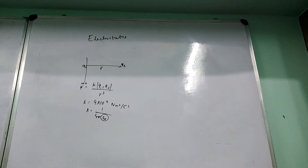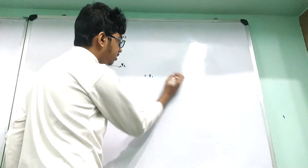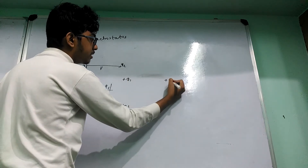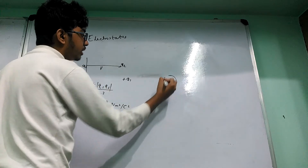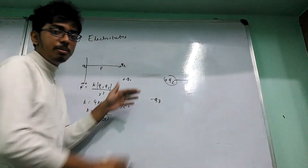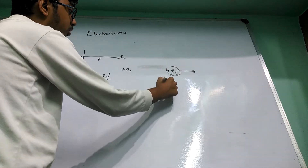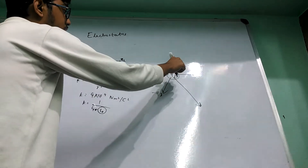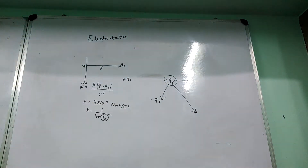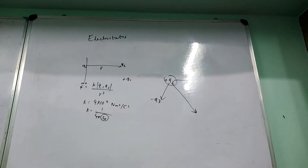Next is the principle of superposition. Suppose you have charges plus Q1, plus Q2, and minus Q3. To find the force on Q2: due to Q1 (both positive), there will be repulsion pushing Q2 away in one direction. Q3 being negatively charged will try to pull Q2 toward it. The resultant vector is the vector sum of these forces. The principle of superposition means we can add the effects of all charges to find the vector sum. That is the basic idea — it's simple vector addition.